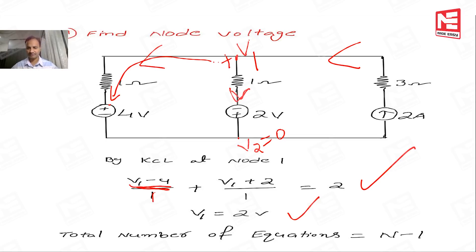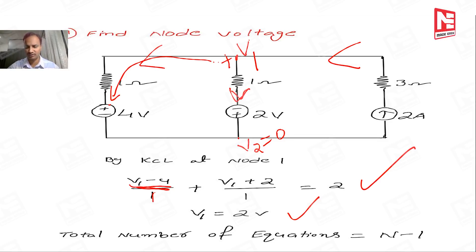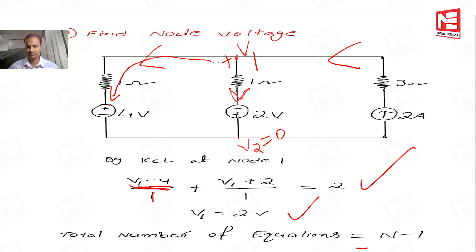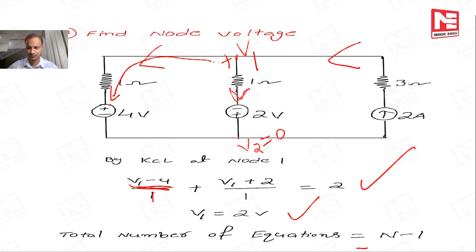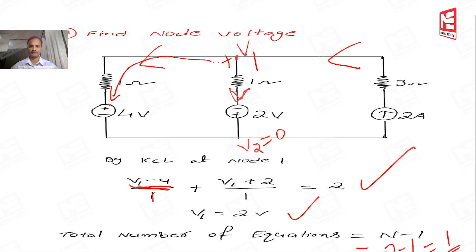Now let us see the total number of equations. The general formula for total number of equations is n minus 1, where n is the total number of principal nodes. In this example, how many principal nodes are there? Two. So 2 minus 1 means only one equation is required.